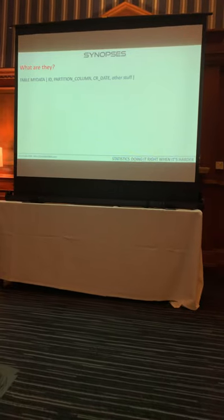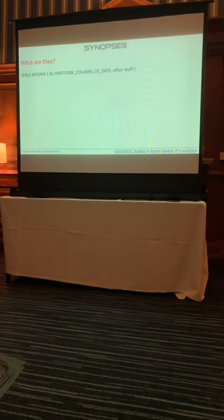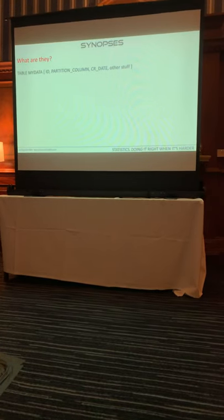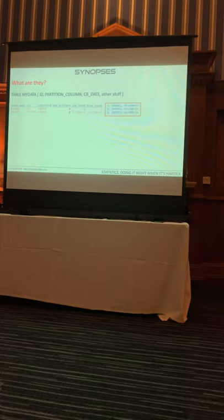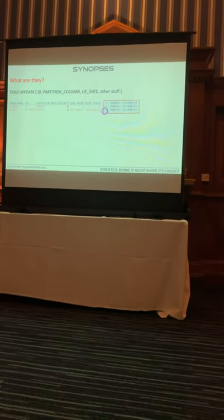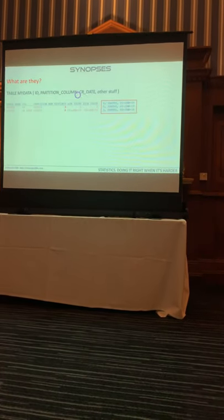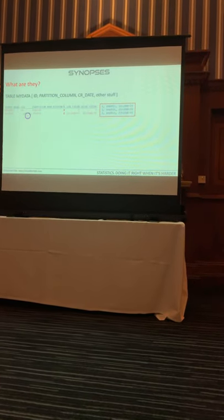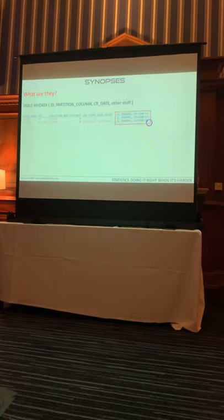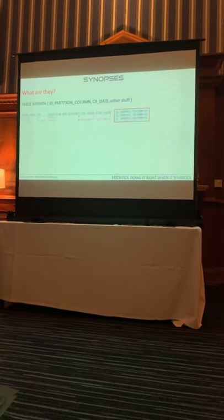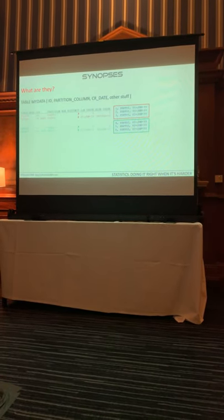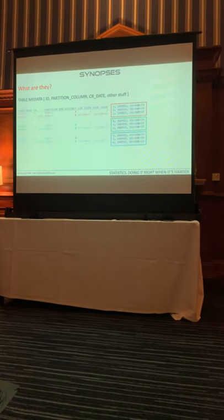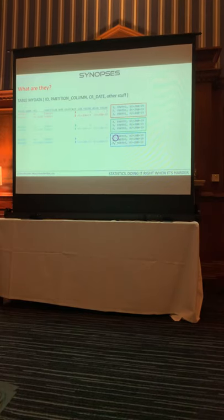I've mentioned synopses a few times and I thought I'd do an investigation to explain them. I've got a table called my_data with three columns: ID, a partition column, and a date. Three partitions, three rows in each. Partition one: ID column has values 1, 2, 3 - three distinct values, low value 1, high value 3. Date column has two distinct values: 1st and 2nd of January. Second partition: three distinct values 4, 5, 6 for the ID, and two distinct values - 1st and 2nd of January again for the date. Third partition: ID values 7, 8, 9 - three distinct values, and 2nd and 3rd of January for the dates.